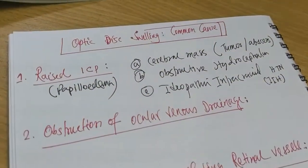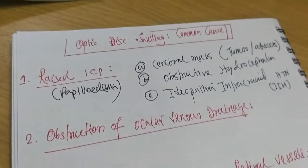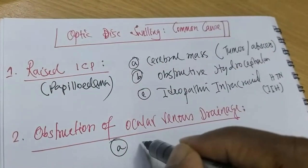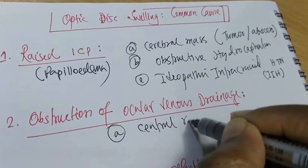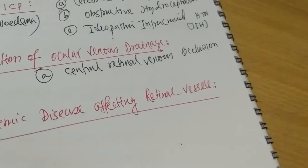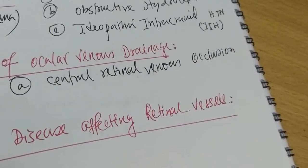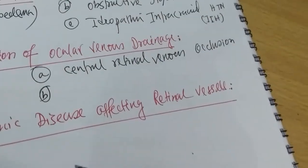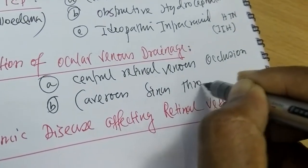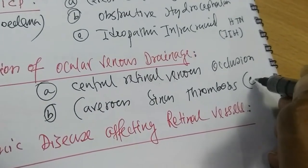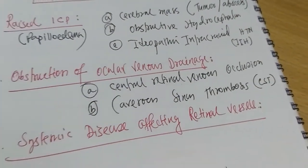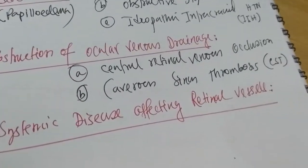The second cause of optic disc swelling is obstruction of ocular venous drainage. This may be caused by: number one, central retinal vein occlusion; and number two — very important clinically — cavernous sinus thrombosis, in short CST. Cavernous sinus thrombosis is commonly found in our clinical wards.